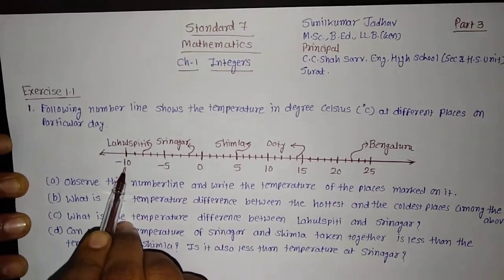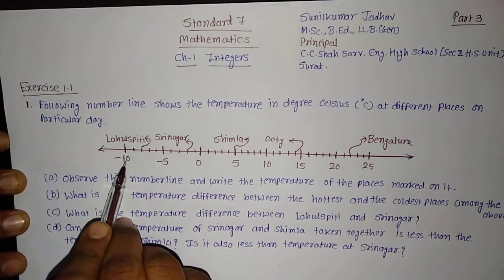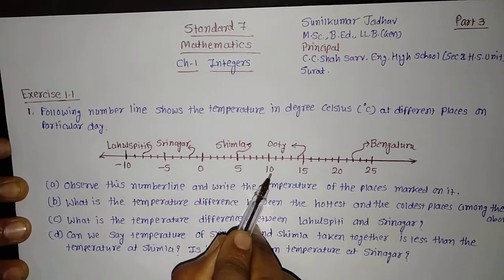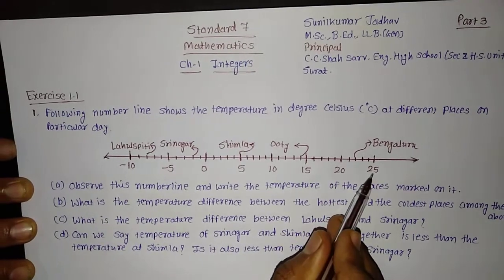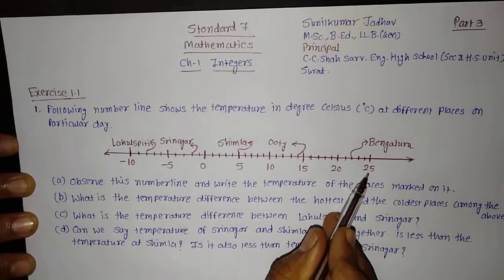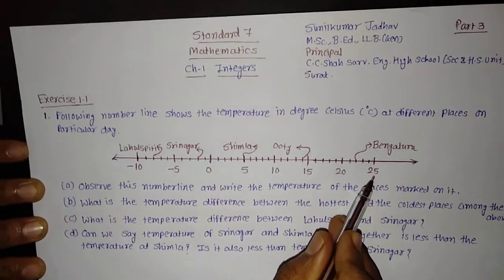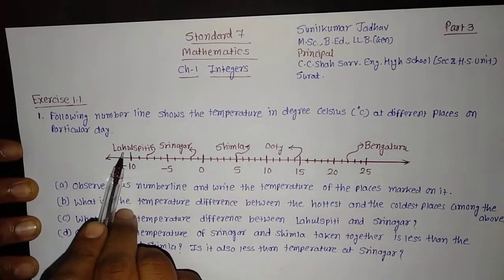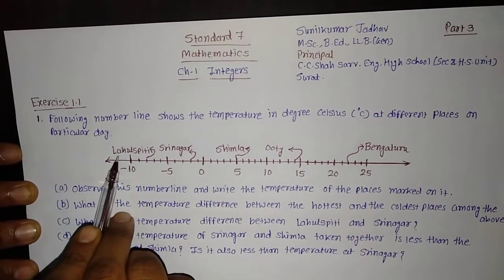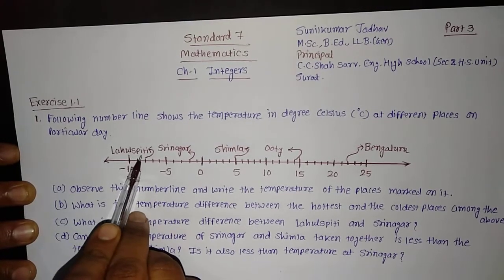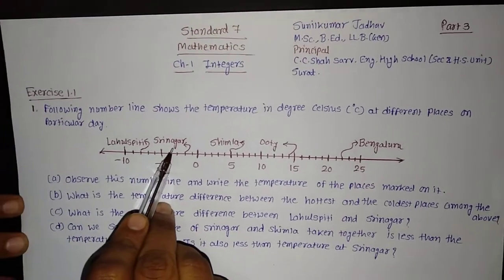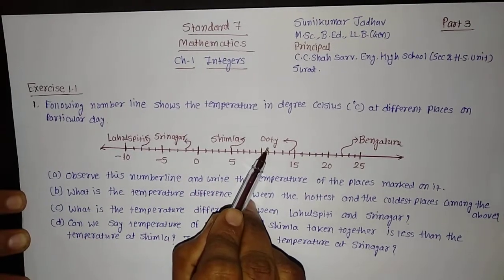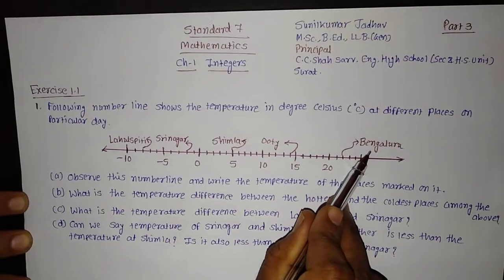Here the number line is given, which shows minus 10, minus 5, 0, 5, 10, 15, 20, and 25 degree Celsius temperature. The places are mentioned on the number line. You can see the first place is Lahulspiti, the second one is Srinagar, the third one is Shimla, the fourth is Uti, and the fifth one is Bangaluru.